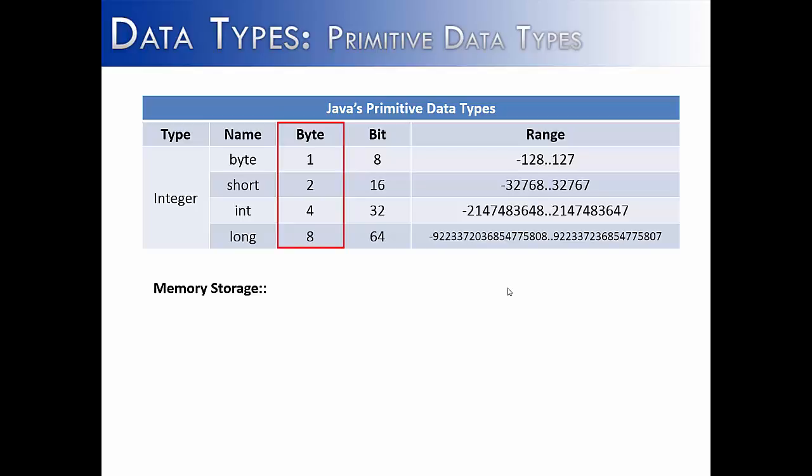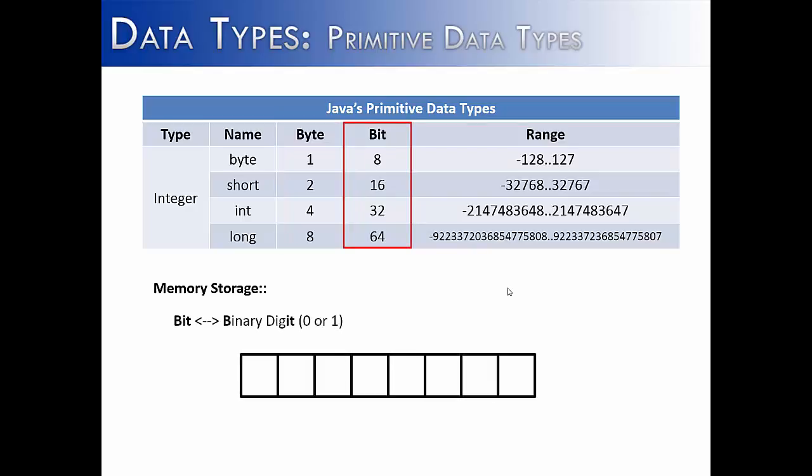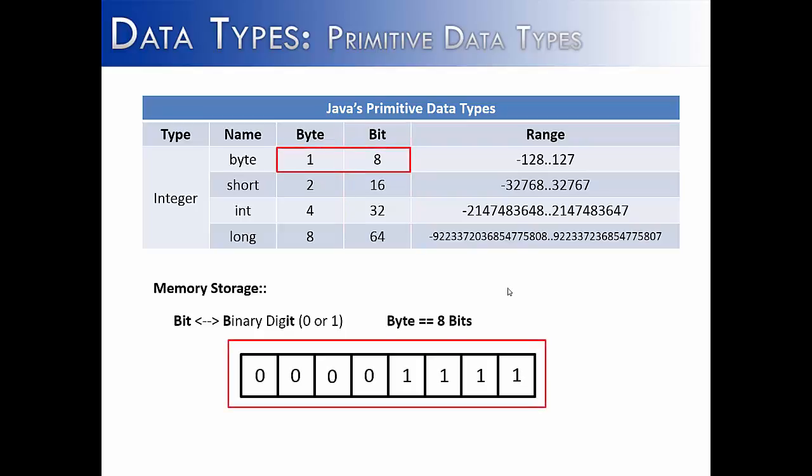When discussing an integer, it is important to talk about its size because that determines its range. And its size is determined by how many bytes it holds. And inside each byte are something called bits. And a byte is made up of 8 bits. A bit simply stands for binary digit. And a binary digit is either a 1 or a 0. I've given an example below. And as you can see, there are 8 slots. And this entire thing right here is called a byte.